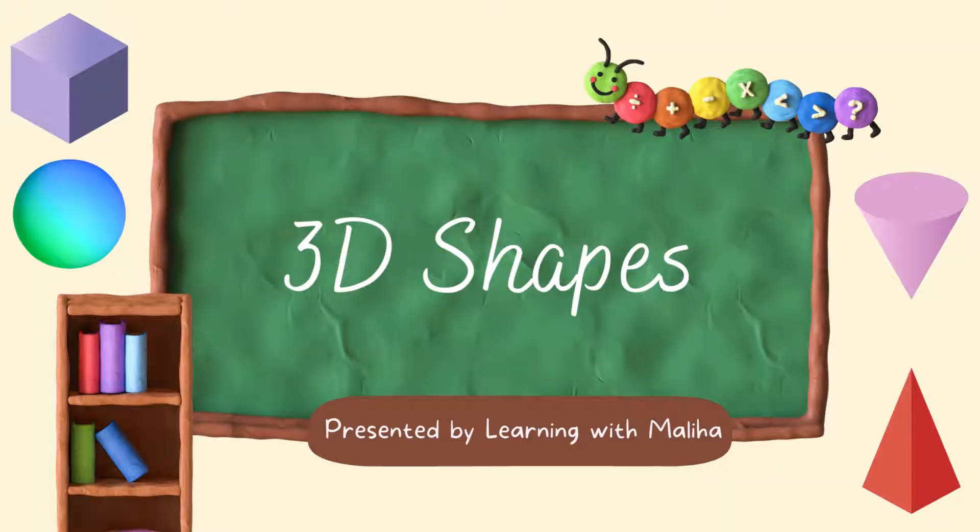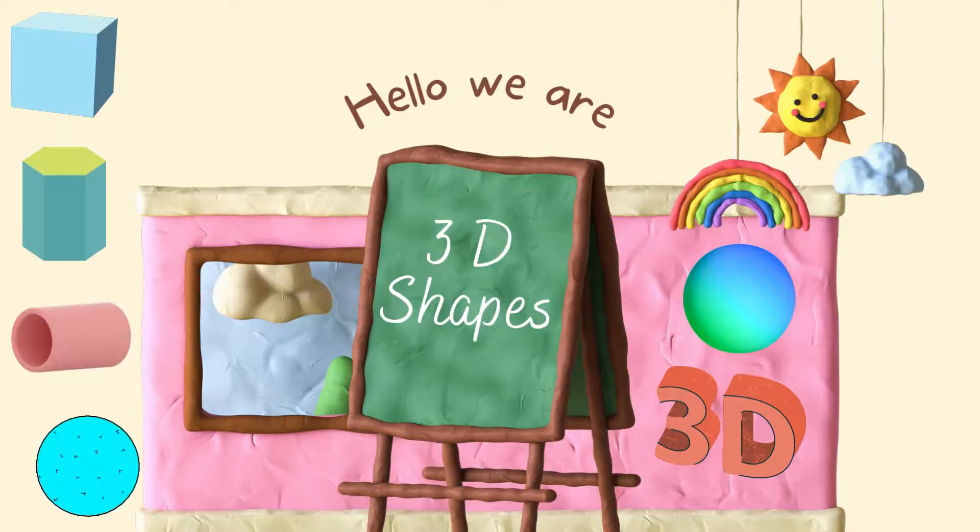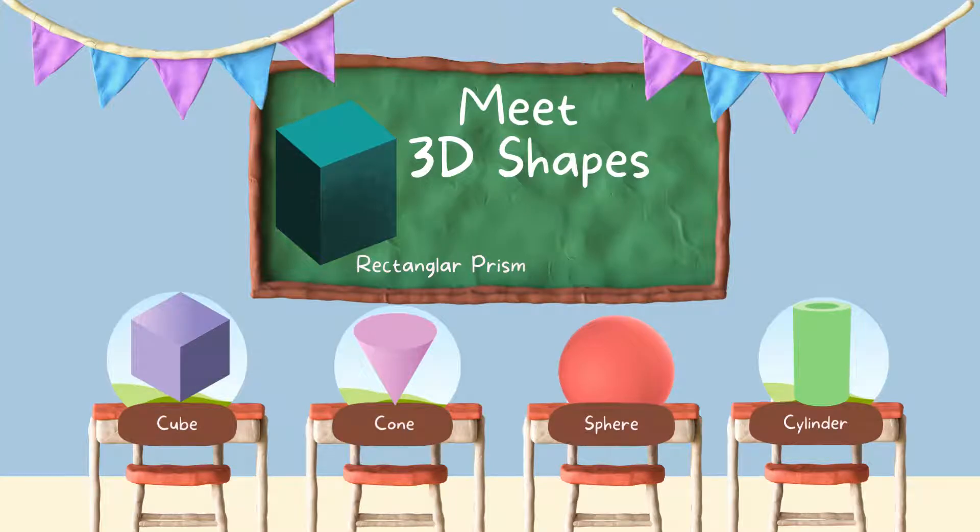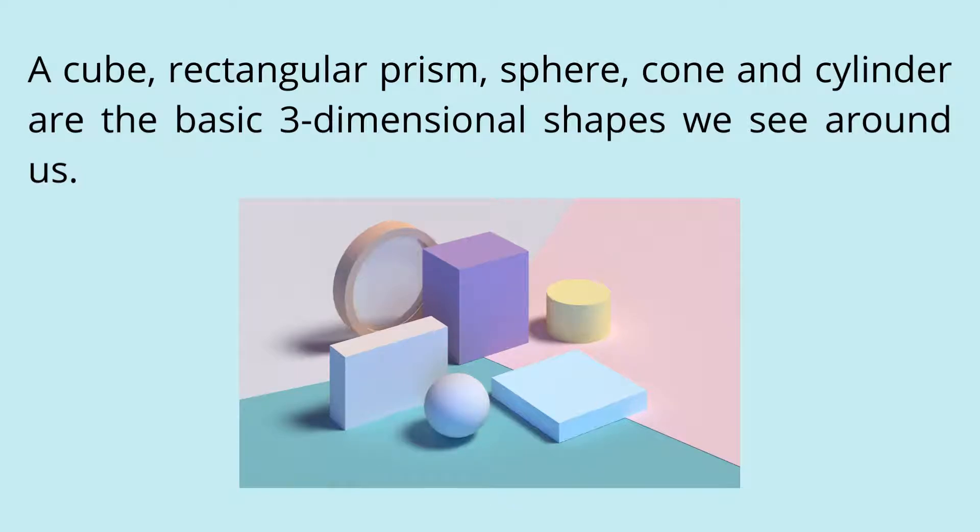3D Shapes presented by Learning with Maliha. These shapes are three-dimensional, that means they have width, height, and depth. Eight 3D shapes: rectangular prism, cube, cone, sphere, cylinder, pyramid, and prism. These are the basic three-dimensional shapes we see around us.